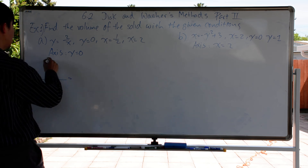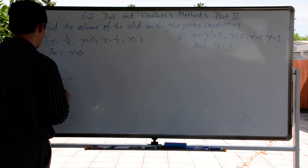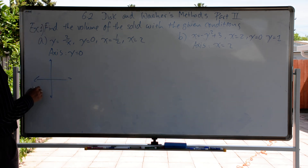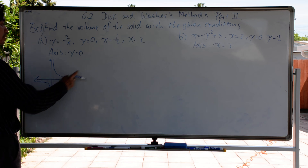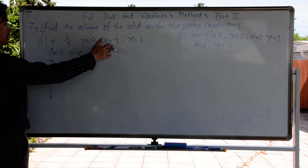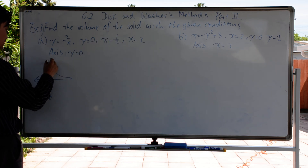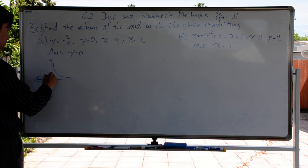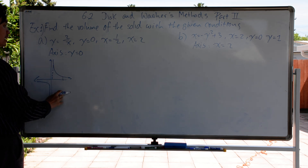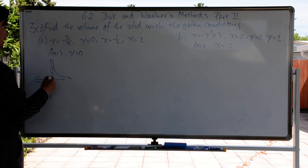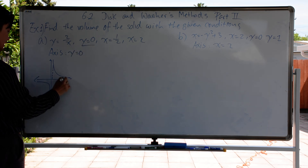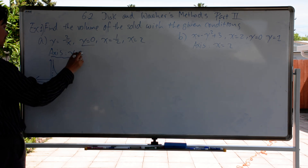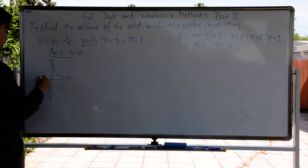For 2 over x, it's a hyperbolic curve, or a rational function. The boundaries are x = 1/2 and x = 2. So 1/2 is somewhere over here, 2 is over here. Then y equals 0 is the boundary as well, which is the x-axis. Don't forget about the revolution axis — it's y equals 0, so we're revolving around the x-axis.